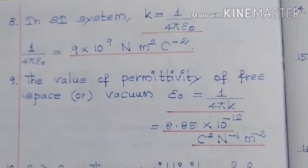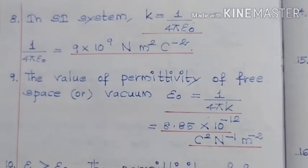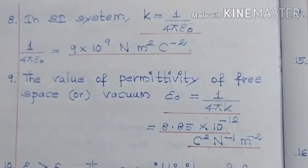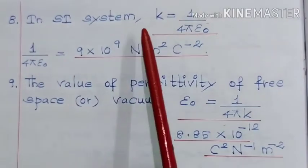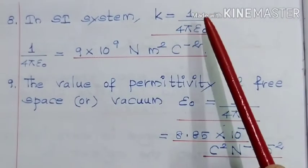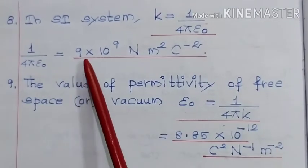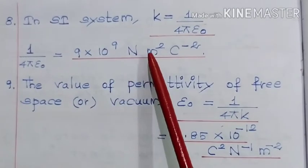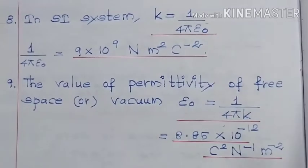The next question is, in SI system, K = 1/(4πε₀), which is nothing but 9 × 10^9 Newton meter squared per Coulomb squared.